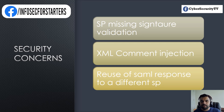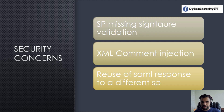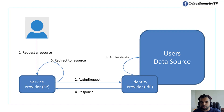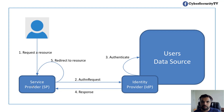So let's talk about the security concerns with this workflow. The first is service provider missing signature validation. If the service provider does not validate whether the response came from the IDP — does not check with the public key — then as an attacker, I can intercept the response coming back from the IDP through Burp or any other tool, change the response so it looks like I got authenticated, and when it reaches the service provider, they'll say the IDP validated this, so I'll grant you access. This is a major flaw if they do not validate the signature.